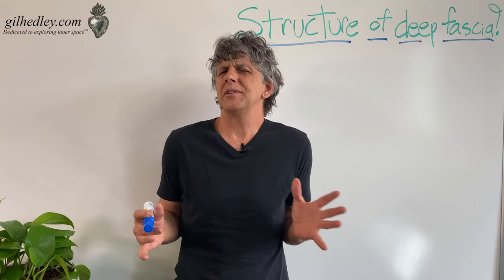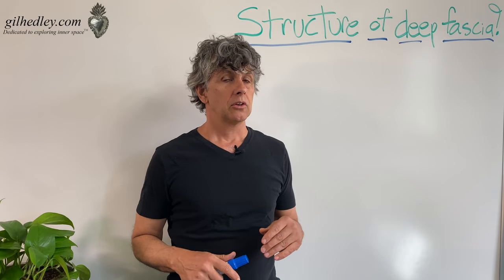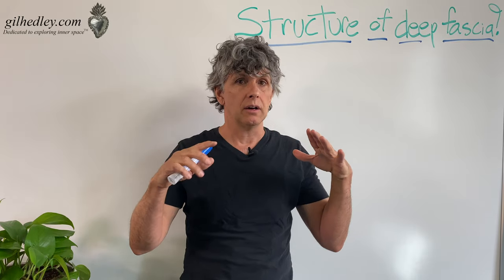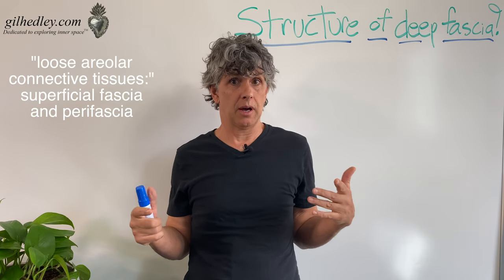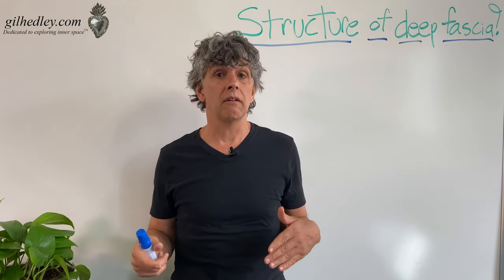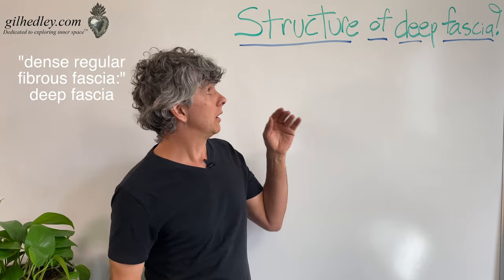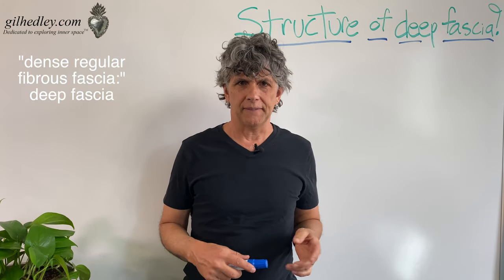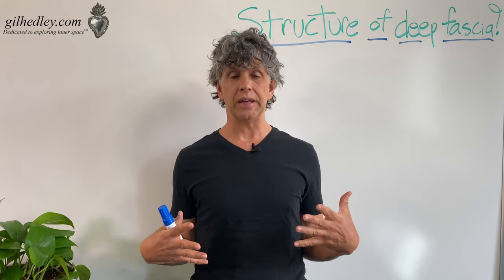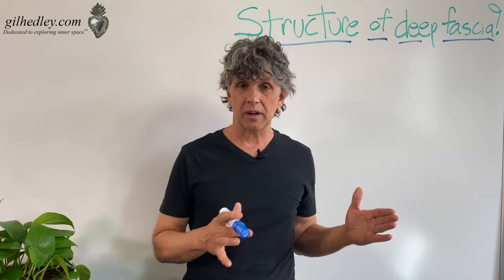How is deep fascia structured? While superficial fascia and perifascia are placed into the category of loose areolar connective tissue by most anatomists, deep fascia gets placed into the category of dense regular fibrous fascia. So we divide them into loose and dense — and deep fascia is the dense one. But there's a great variety of ways the human body structures its deep fascia, so it's kind of a continuum of fiber organization.